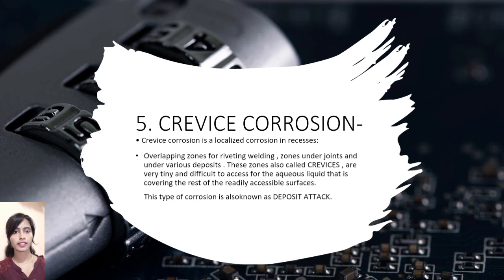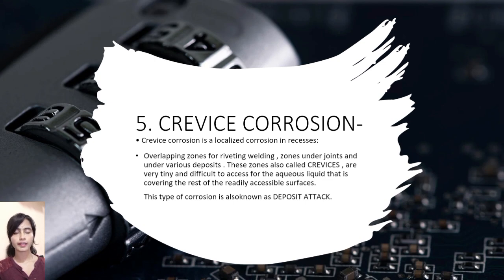Crevice corrosion. Crevice corrosion is a localized corrosion occurring in recesses — overlapping zones, welding zones, under joints, and under various deposits. These zones, also called crevices, are very thin and difficult to access for the corroding liquid that covers the rest of the accessible surface. This type of corrosion is also known as deposit attack.